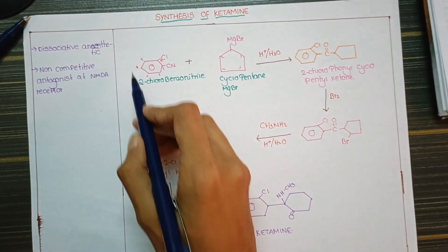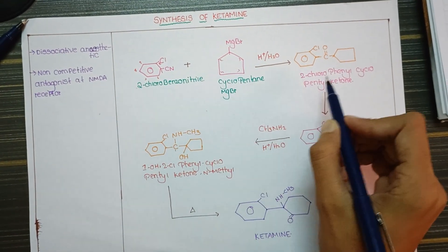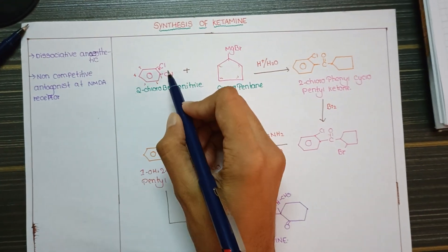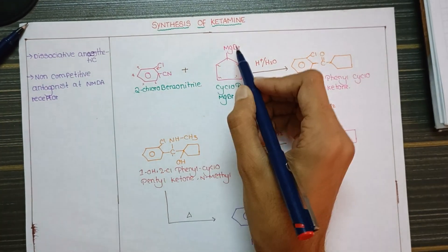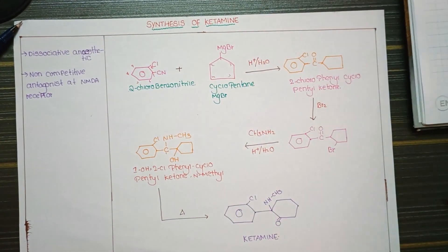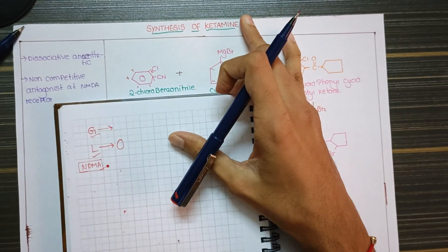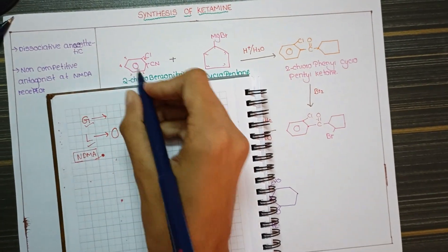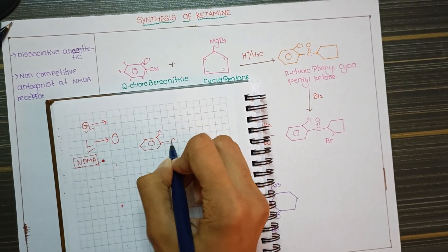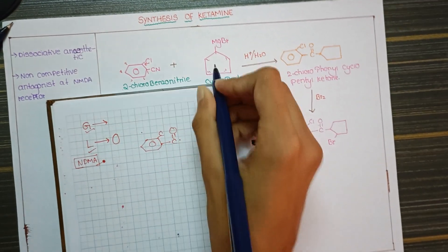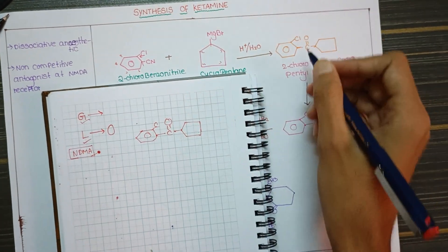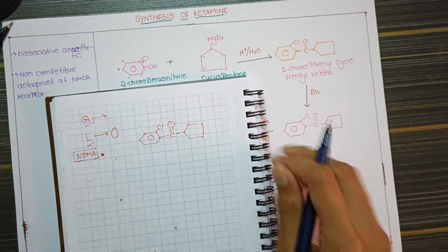The intermediate results in the formation of a structure with the same chloride here, cyanide here, and cyclopentane attached.